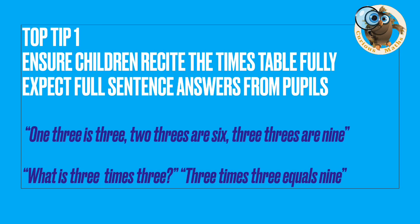Tip 1: Ensure children recite their times tables fully. This is different to just counting — for example, 3, 6, 9. Instead, ask children to say the full sentence: '1 three is 3, 2 threes is 6, 3 threes is 9.' This is important because when asked 'what are 3 threes?' their brain will say '3 threes is 9' instead of counting on fingers. Whenever you ask a child a times table question, expect a full answer.